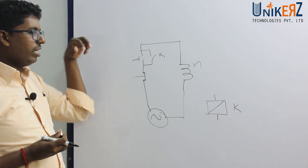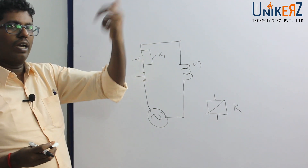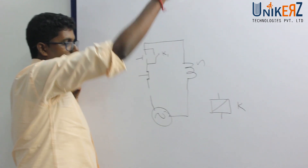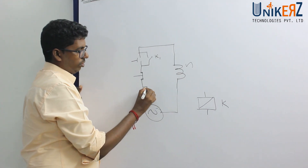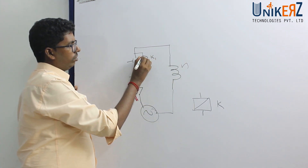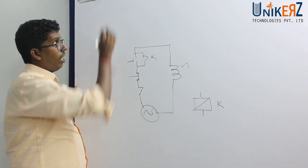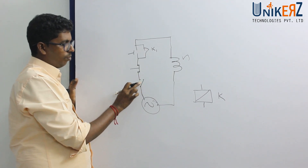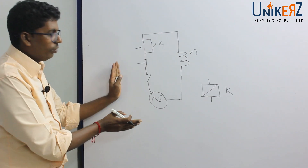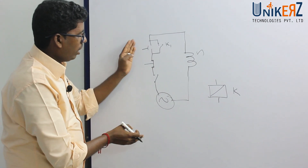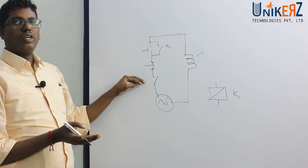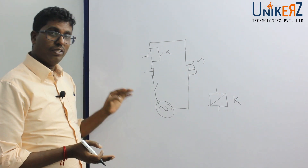I can introduce an NC high level sensor. Then I can introduce NC — high level sensor. Then I can introduce NC. So in this way: select switch, start, stop, high level sensor — NO or NC element.